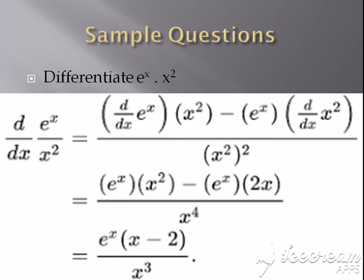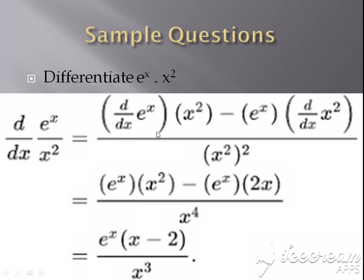Again, if u is the first and v is the second: v squared goes in the denominator, v remains unchanged times the differentiation of u, minus u unchanged times the differentiation of v — that is the second — and then you solve.